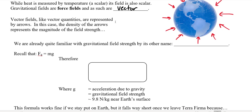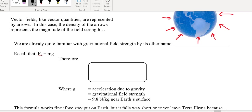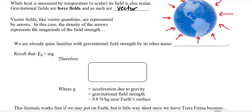Gravitational field is actually a dear friend from Physics 11 — it's the acceleration due to gravity. Gravitational field and acceleration due to gravity are the same thing, because while mass tends to create a gravitational field, mass also tends to accelerate in a gravitational field. The acceleration of objects on Earth is due to its gravitational field.